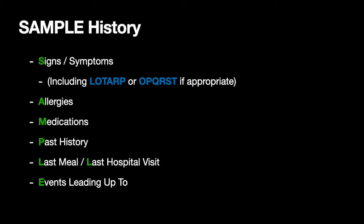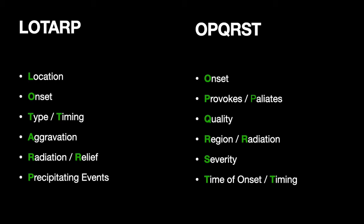A quick review of LOTARP and OPQRST: for those unfamiliar with these two mnemonics, they evaluate very similar things in terms of patient symptomology. They're most commonly used for pain — very often for cardiac chest pain or ischemic chest pain. LOTARP is very commonly used in higher levels of care; OPQRST is less so, but it doesn't really matter which one you use as long as you're getting the information.